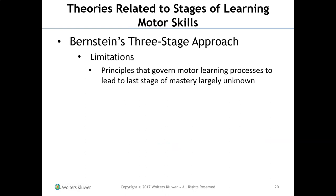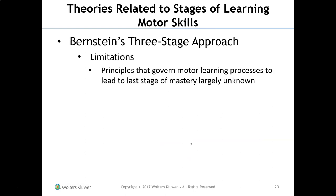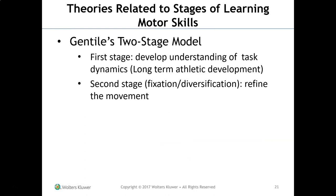A limitation of Bernstein's approach is that the principles governing motor learning processes that lead to the last stage of mastery are largely unknown — there's such large variance in what leads to mastery that the research isn't conclusive. Now, Gentile's two-stage model of motor learning: the first stage is developing an understanding of the task dynamics, and the second stage is fixation or diversification — refining the movement.